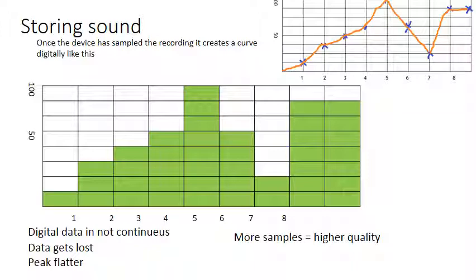So we've set up our microphone, we've recorded our analogue wave, and then what happens next? Once the device has sampled the recording, it creates a curve digitally like this. Now the top right-hand corner shows you the analogue wave. And remember, we marked the points at certain amplitude and we worked out what those readings were. But the computer recreates this digitally.